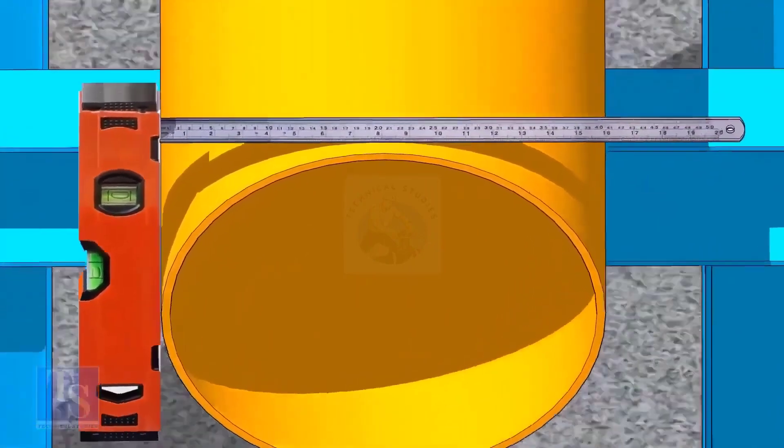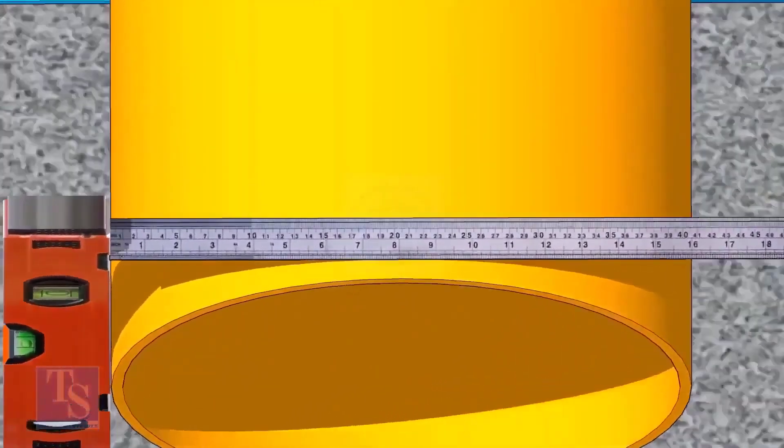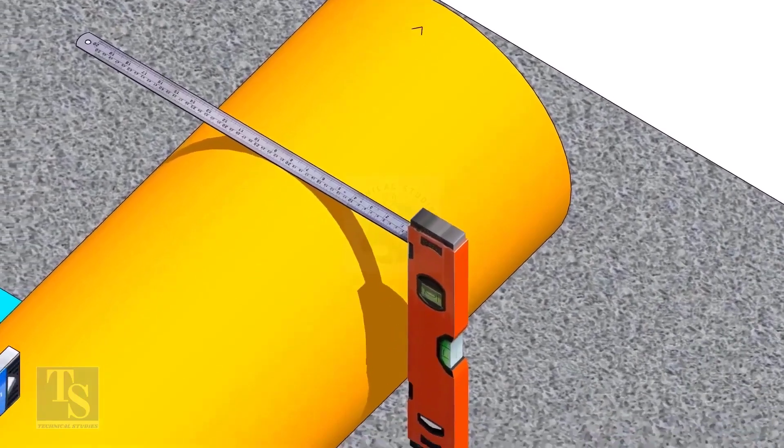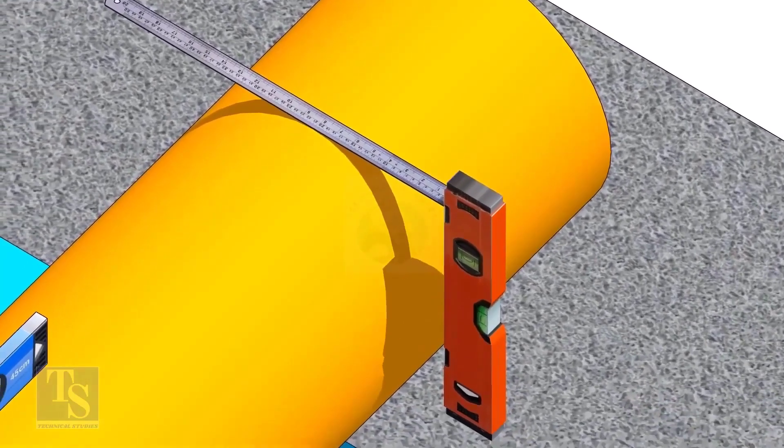Mark half OD at 300mm apart. This pipe OD is 406mm, so mark 203mm from the vertical level bottle on the top of the pipe. And draw a line connecting these marks.